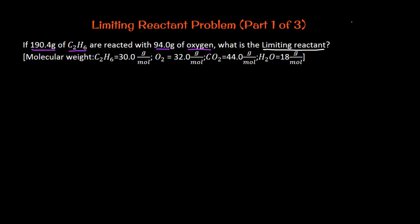I always like to identify what I'm given, especially when working in any kind of applied mathematical section. I'm given 190.4 grams of C2H6 — this is also known as ethane. Nothing you have to recognize at this point, but if you go into organic chemistry you're going to see it quite often.